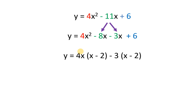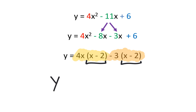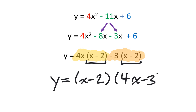At this point, think of everything in the first group as one group and everything in the second group as another group. Take a close look — you'll notice that (x minus 2) in brackets is common to both groups. So the y equals stays the same. I'm going to place (x minus 2) in brackets, and then the leftover 4x and negative 3 go together in their own brackets. In conclusion, we've just converted standard form to factored form using decomposition.